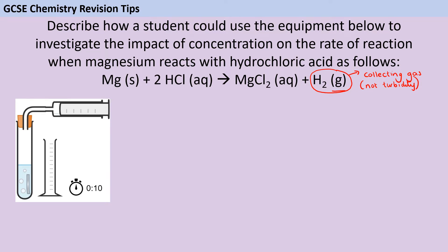Once you've established that this isn't an investigation looking at turbidity, the next thing to do is concentrate on your variables. It's a really strong strategy whenever you're writing a method to begin by explicitly noting down what your independent, dependent, and control variables are. One of the most common ways candidates lose marks is that they write the whole method but then forget to say go back and do it again changing the independent variable, or they forget to explicitly mention the dependent variable, or they don't mention any control variables at all.